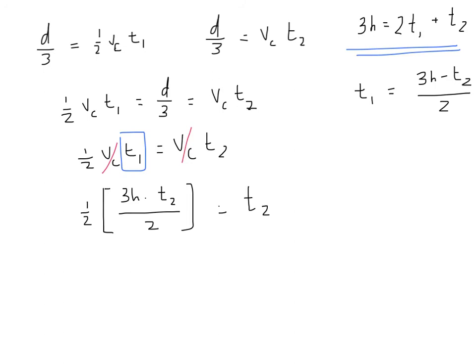So to solve for T_2, I have to get all of the T_2s together on one side. So to do that, I'm going to distribute the one half through each of these terms. And I get 3 hours over 4, which is 0.75 hours, minus T_2 over 4 equals T_2.